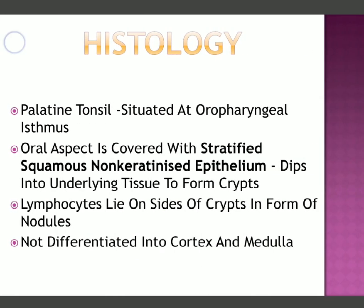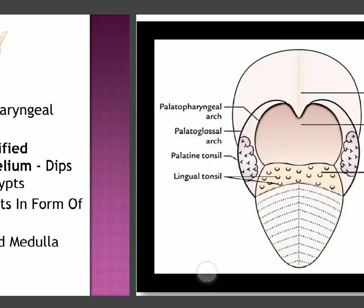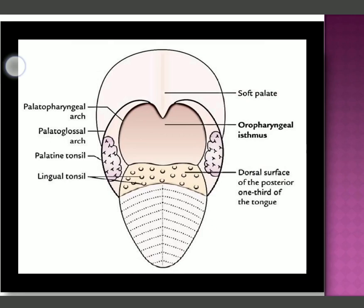Regarding histology: the palatine tonsil is situated in the oropharyngeal isthmus. The oral aspect or medial surface is covered with stratified squamous non-keratinized epithelium, which dips into the underlying tissue to form crypts. Lymphocytes lie on the sides of the crypts in the form of nodules. Unlike some other lymphoid organs, the tonsil is not differentiated into cortex and medulla.